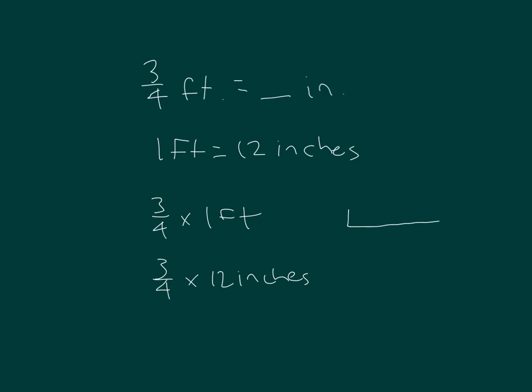I could use a tape diagram to help me. Three quarters times 12. Each of those is worth three, so that's three, six, nine. Three quarters times 12 is equal to nine inches. Three quarters of a foot is equal to nine inches.